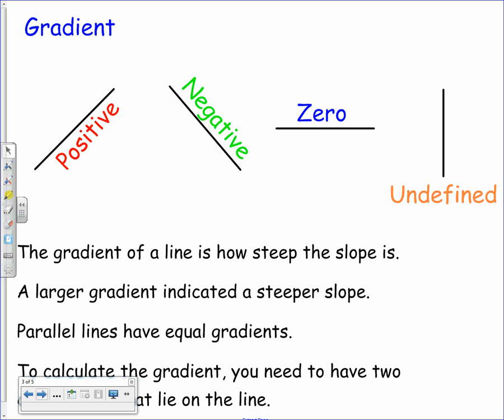So let's start with gradient. Remember there are four different types of gradient that you can have for a straight line. You can have a positive gradient where it slopes from left to right upwards, or a negative gradient where it slopes downwards from left to right. We then have two special cases. A horizontal line has a zero gradient and a vertical line has an undefined gradient.